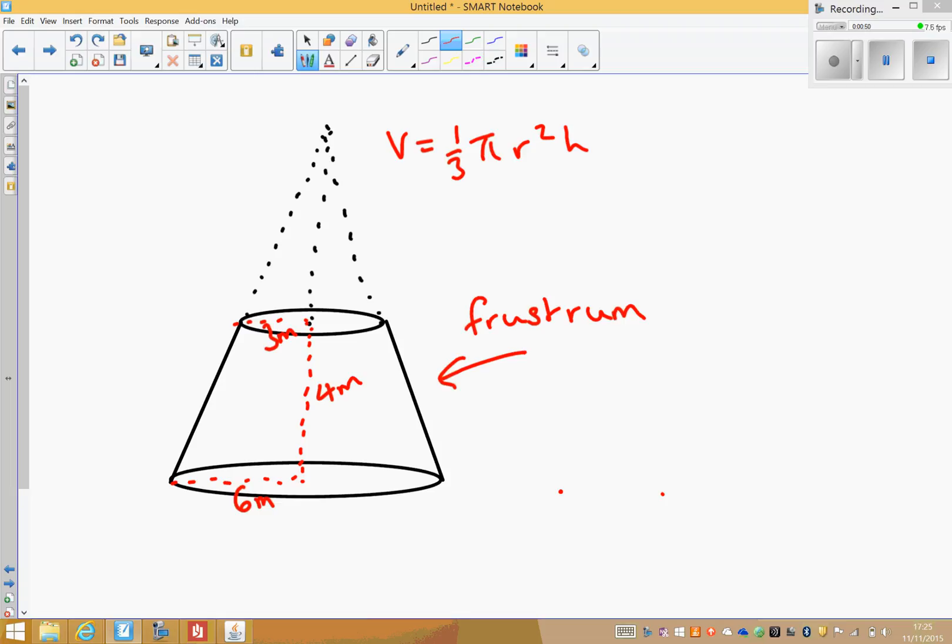The radius of the circle at the top of the frustrum is 3 meters, and you also need to know that if there was a cone on top, it would be 4 meters between this point here and this point here.